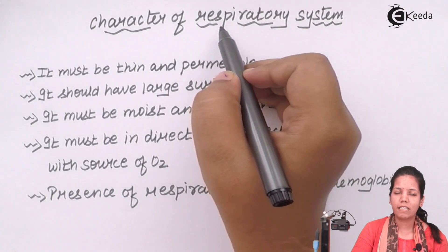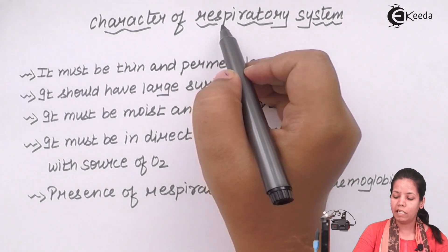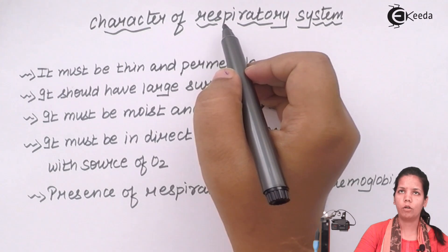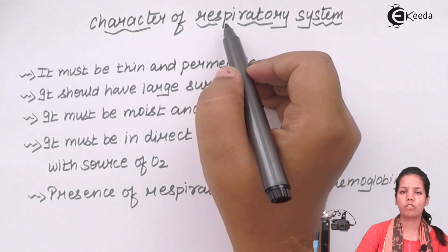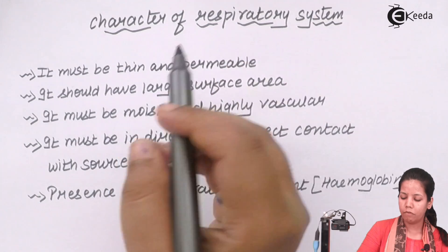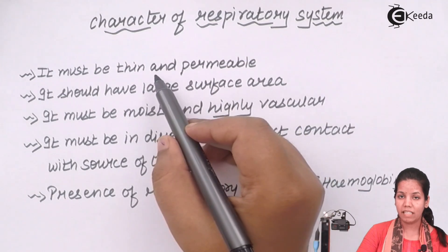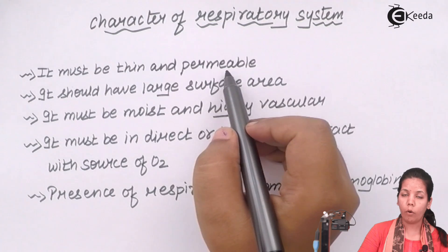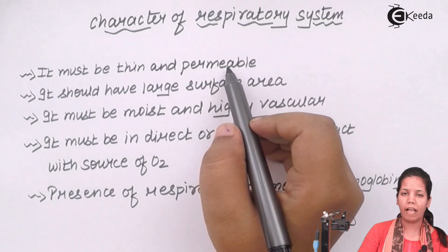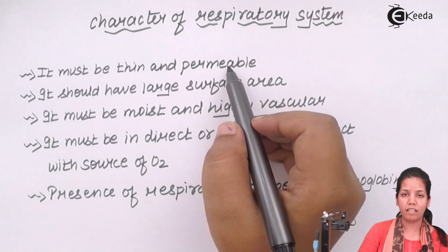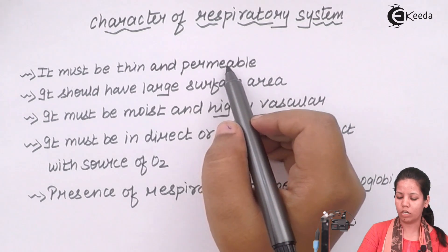So, what are the characteristics that would be needed for a respiratory system to work properly and carry out gaseous exchange? Let's go through them. Firstly, it must be thin and permeable. Permeability of your alveoli or your respiratory system is very necessary, because if that's not present, how will gaseous exchange take place?